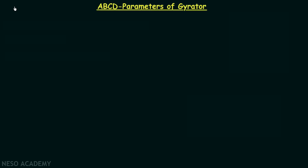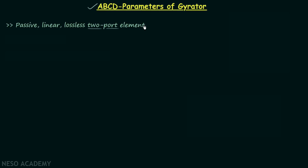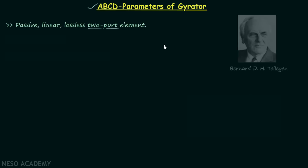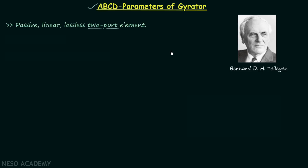We have obtained the ABCD parameters of an ideal transformer and now we are going to find the ABCD parameters of a gyrator. The gyrator is a microwave element — passive, linear, and lossless two-port element. It was proposed in 1948 by Bernard D.H. Tellegen. Unlike resistor, capacitor, inductor, and ideal transformer, gyrator is a non-reciprocal element.